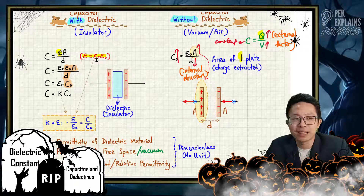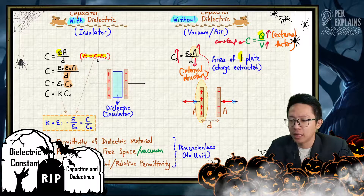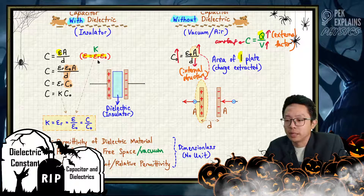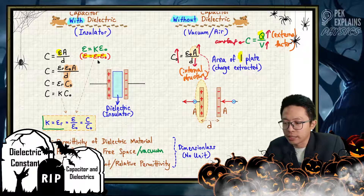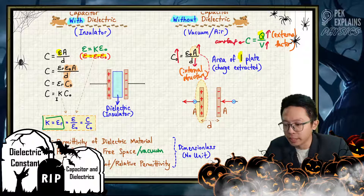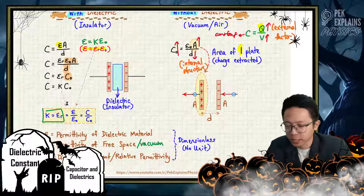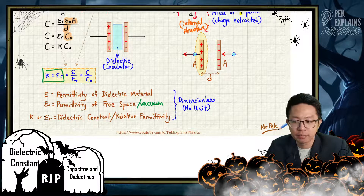So ε = εᵣ × ε₀. What is εᵣ? You can also write εᵣ as K. So you can write ε = Kε₀. K is the same as εᵣ. K or εᵣ — they are the same thing. They are known as the dielectric constant. Or we also can call it relative permittivity. The R in εᵣ means relative — it is a comparison between ε and ε₀.